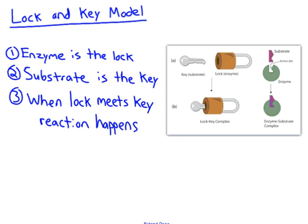This specific enzyme-substrate relationship is why biologists refer to it as the lock and key model. The enzyme acts as the lock, and the substrate — the reactant — acts as the key. A reaction happens only when the specific lock meets the specific key.